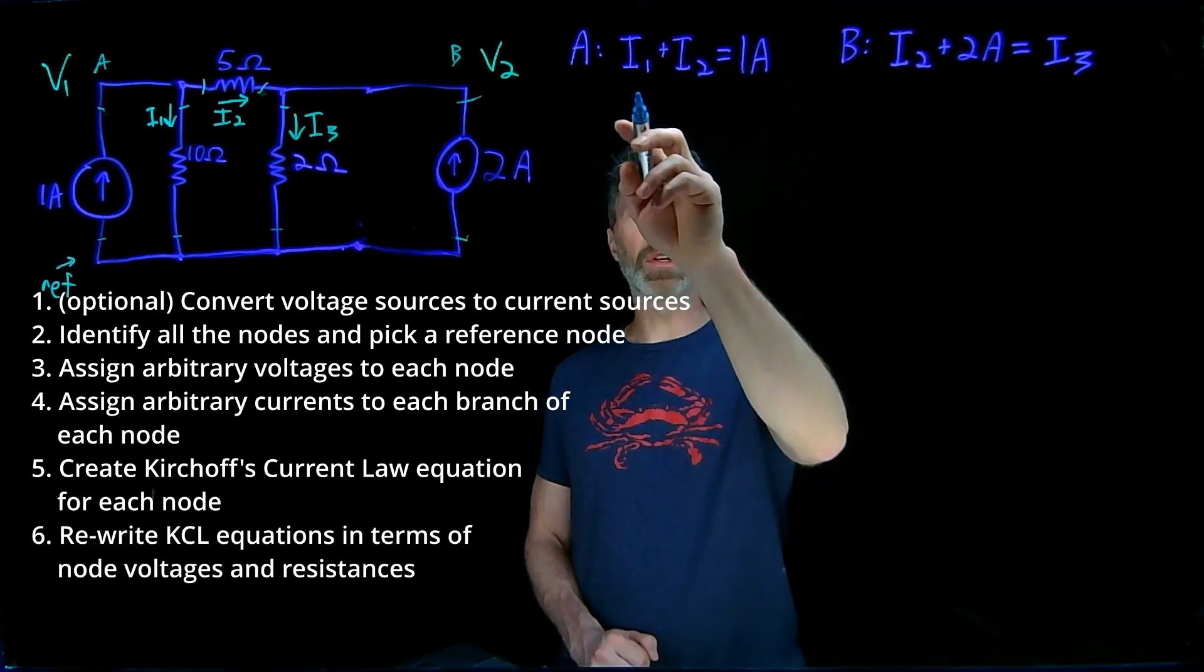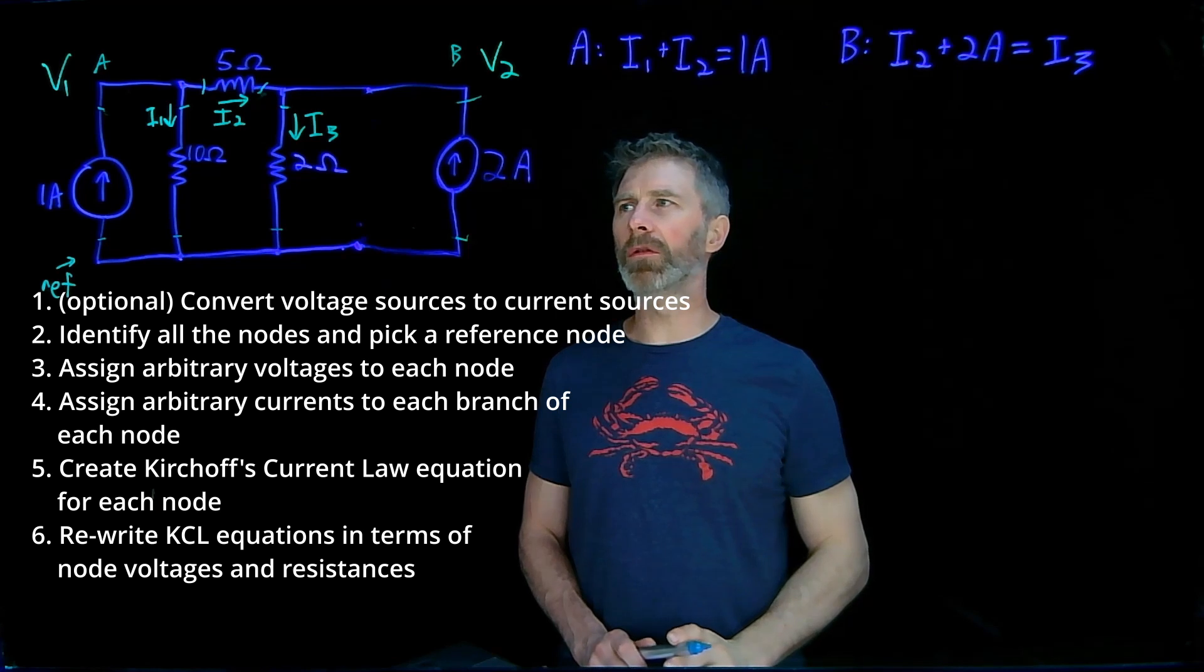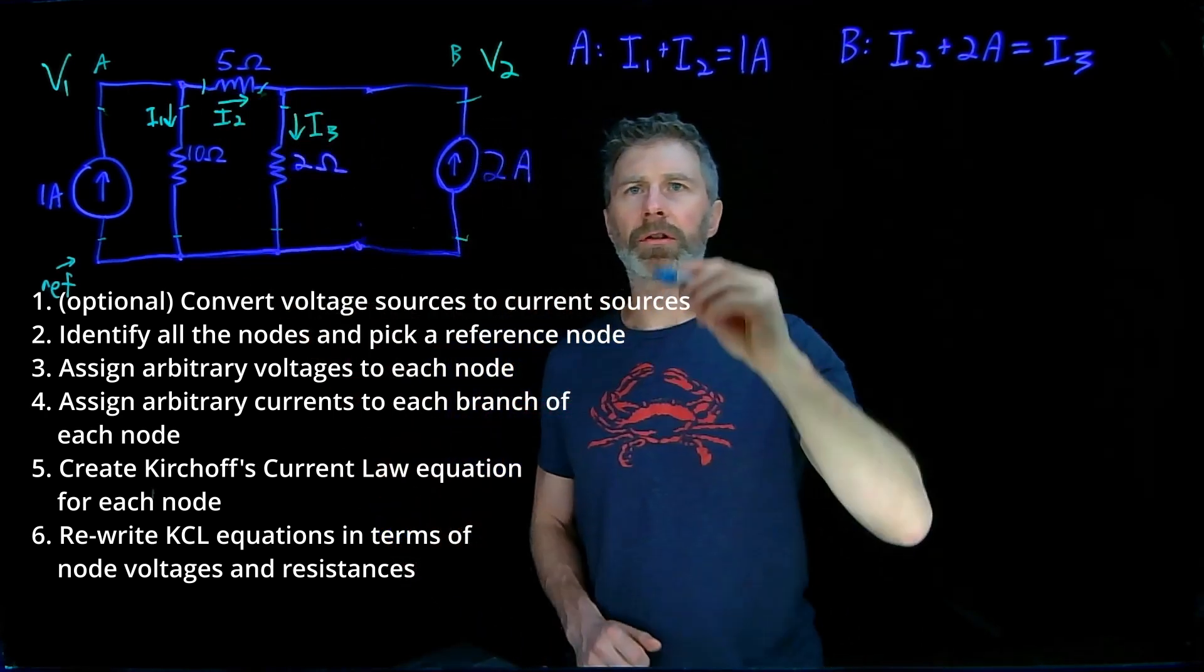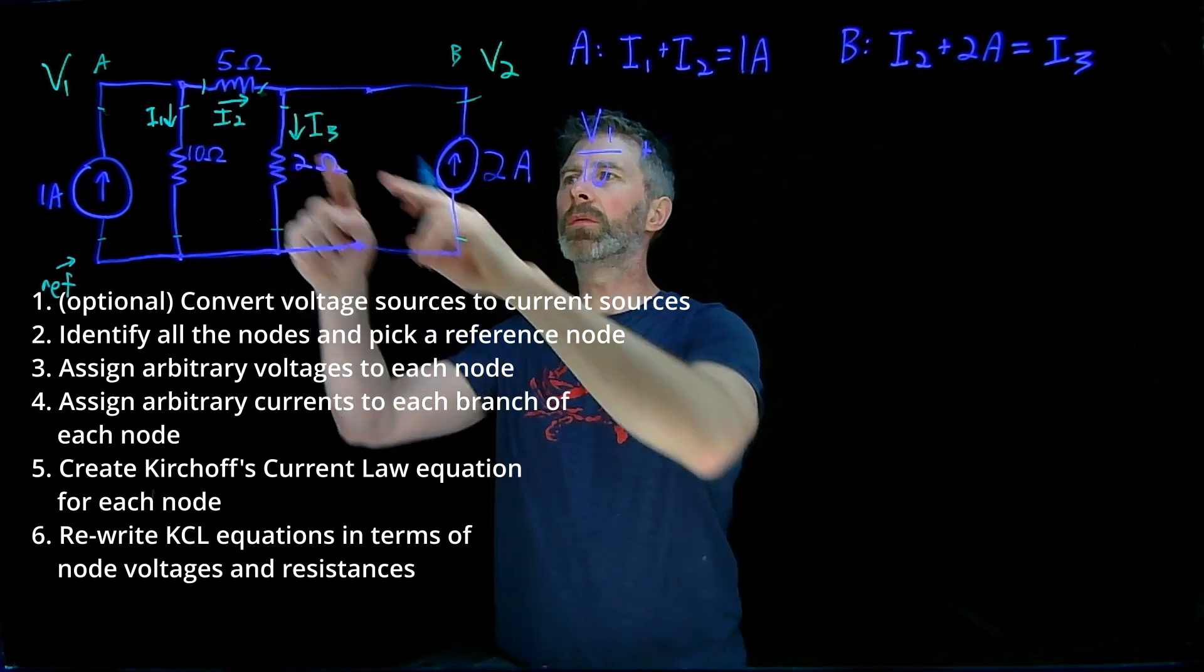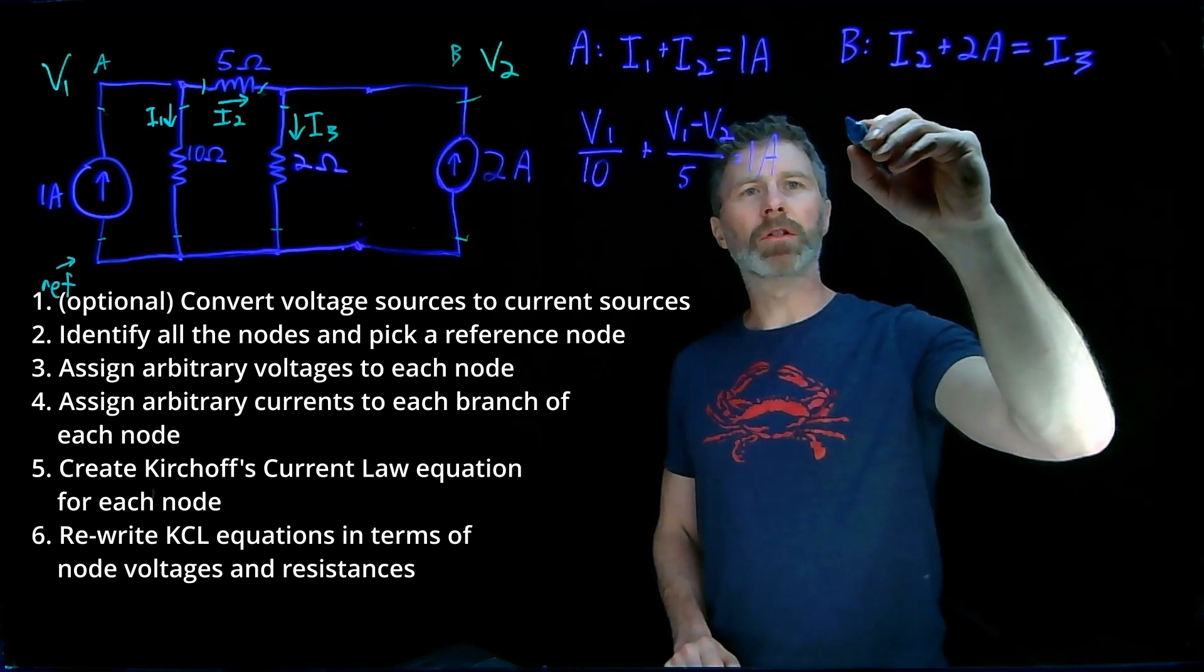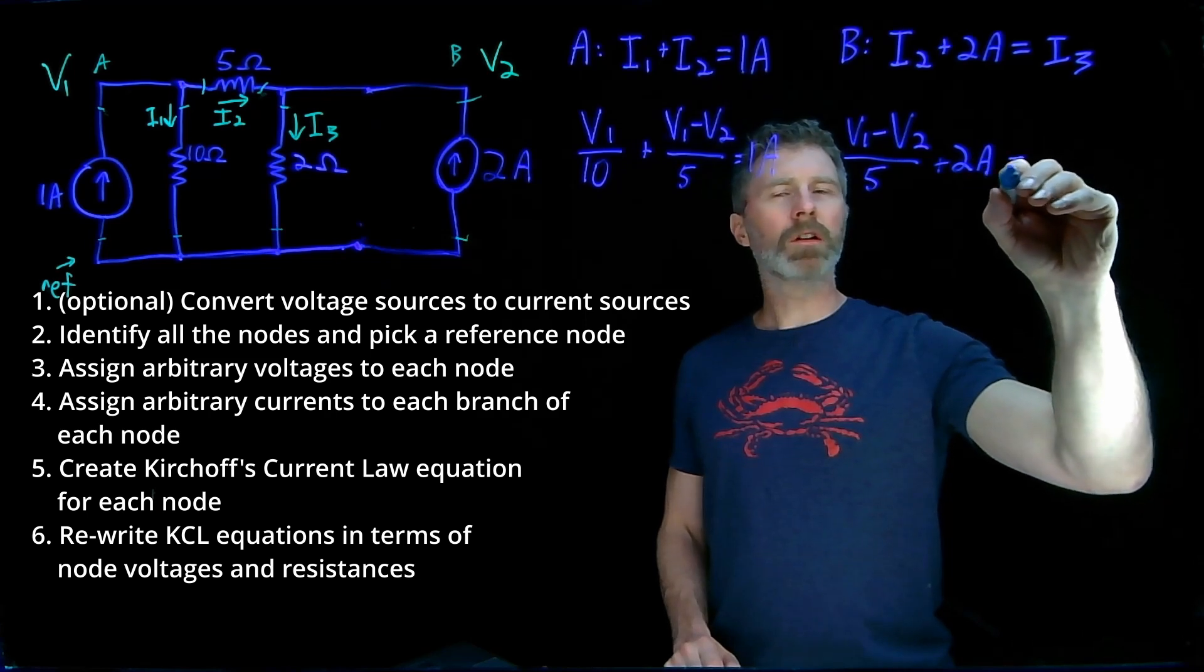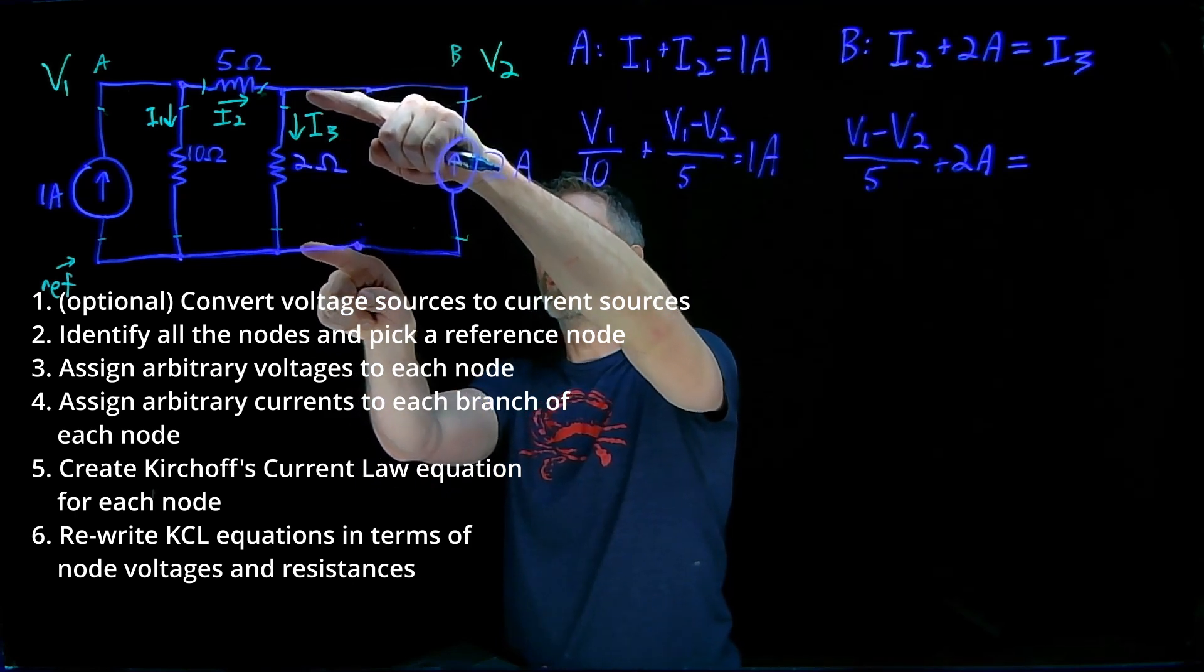The next thing to do is rewrite each one of these arbitrary currents, I1, I2, and I3, in terms of the voltages across them and the resistances that the current's going through. For I1, we have V1 across that 10 ohm resistor, so V1 over 10. I2 is V1 minus V2 divided by 5. For node B, I2 is V1 minus V2 over 5 plus two amps equals I3. I3 is going in this direction, so V2 over 2.